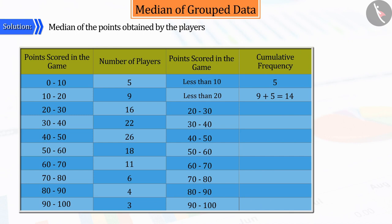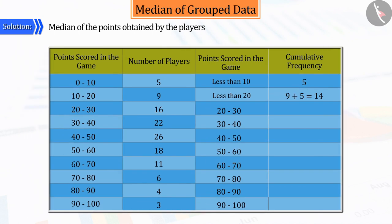Because here, those players will also be included who have scored points between the class interval 0 to 10, and those players will also be included who have scored between class interval 10 to 20. Where 14 is the cumulative frequency of class 10 to 20.